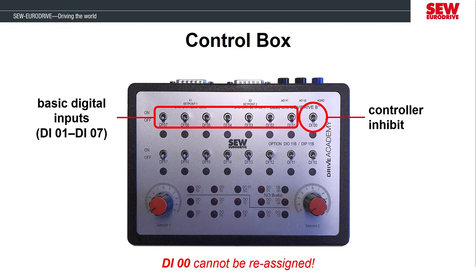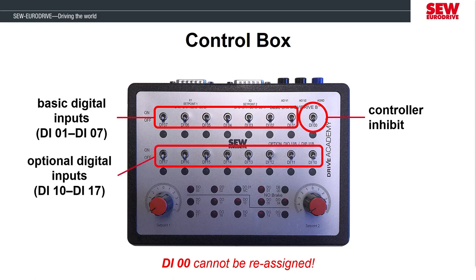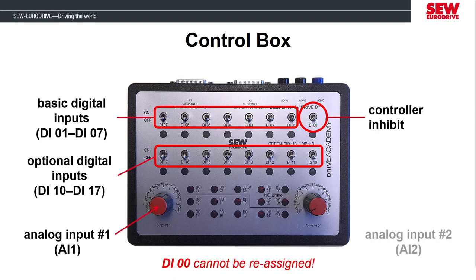The MubiDrive comes with seven basic digital inputs that can be assigned as needed for the application. This demo unit has a terminal expansion card installed in the option bay, so it has additional inputs numbered DI10 through DI17. The MubiDrive comes with one analog input that I can control with a rotary dial. Since this demo has a terminal expansion card installed, it also comes with an additional analog input controlled with another rotary dial.